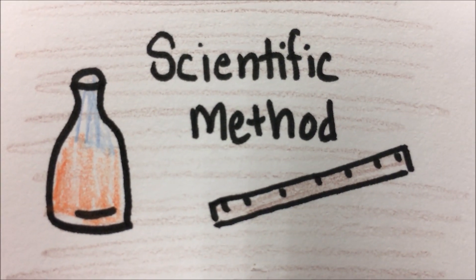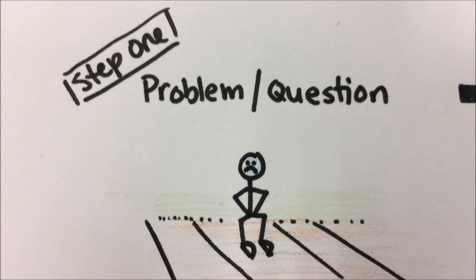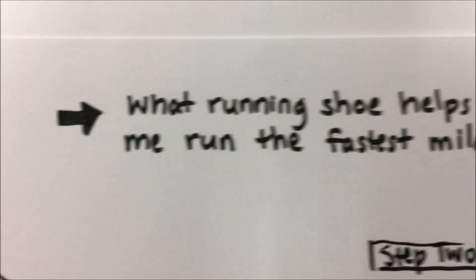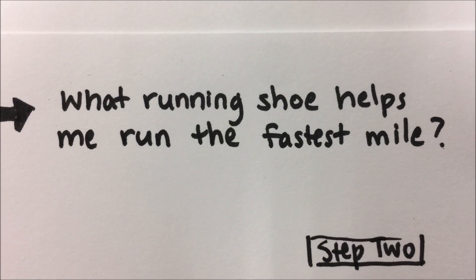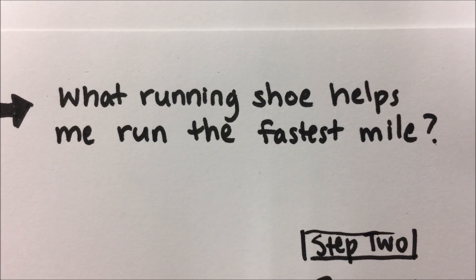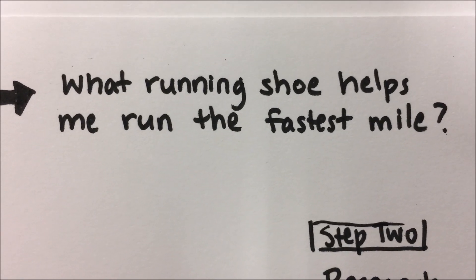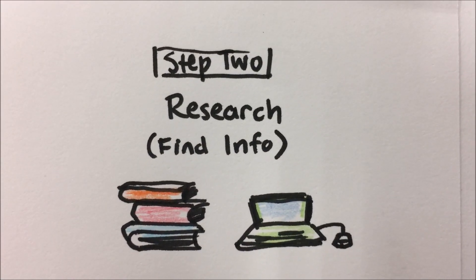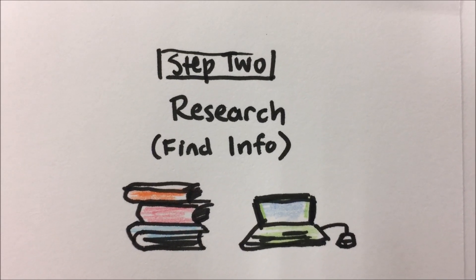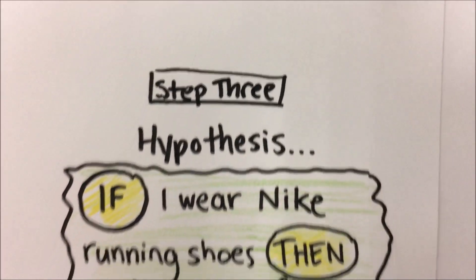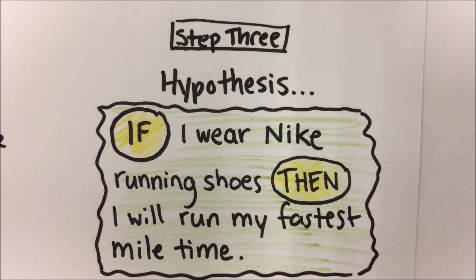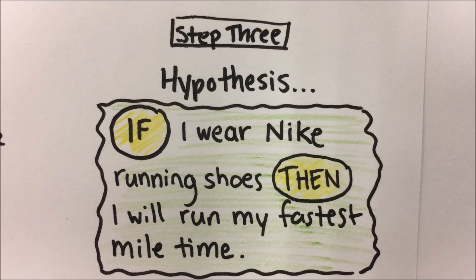The last part of our unit is the scientific method, which has six parts. The first part deals with the problem or question we're trying to solve. In this case, we have a stick figure who's sad because he's trying to join the track team and his times aren't that great. So our problem is: what running shoe helps me run the fastest mile? That might be stated as a question or a problem — I'm trying to have the fastest time and I'm not doing it. Step two is taking that problem and doing some research, finding what helps me get faster. In the process, I'm going to develop a hypothesis — an if-then statement based on my research. In this case: if I wear Nike running shoes, then I will run my fastest mile time.